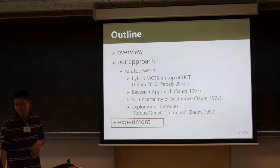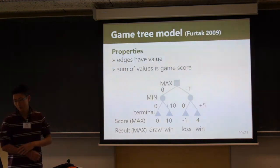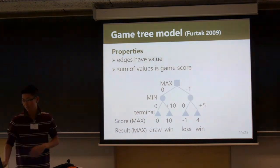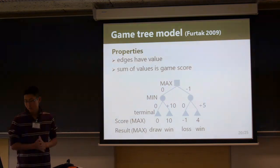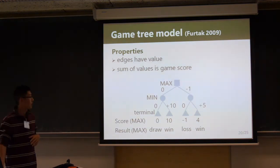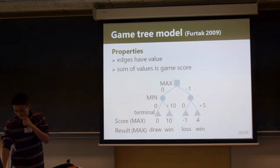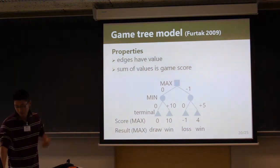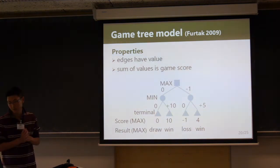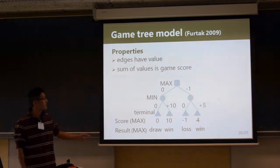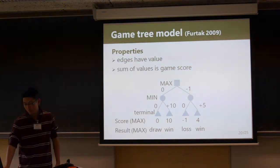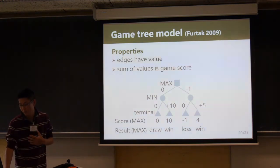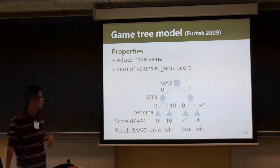Now I explain our experiment. I introduce a key game called Game 3 model used in our experiment. In the Game 3 model, the tree has a uniform branching factor and H levels. A score at a terminal is the sum of edge values from the root to the terminal. Positive score means win, zero means draw, and negative means loss.